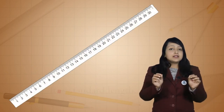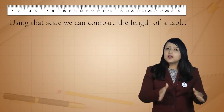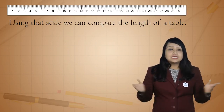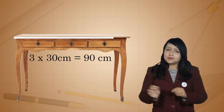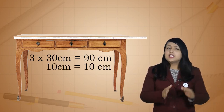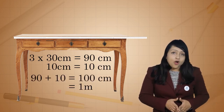For instance, we might have a centimeter scale — it is a standard length. Using the scale, we can compare the length of a table. The table is 3 times the 30-centimeter scale and 10 centimeters more — that is 100 centimeters, or 1 meter long.